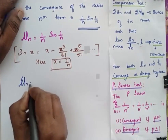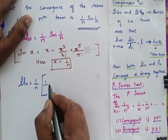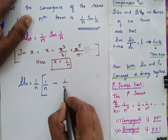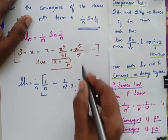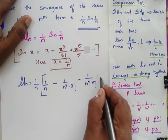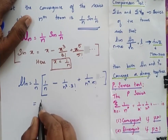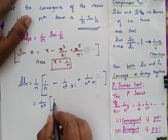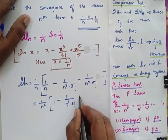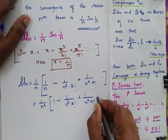So now u_n = (1/n) · [1/n - (1/n)³/3! + (1/n)⁵/5! - ...]. That is, (1/n)[1/n - 1/(n³·3!) + 1/(n⁵·5!) + ...].